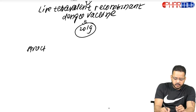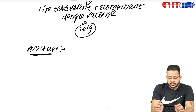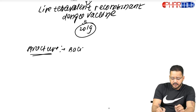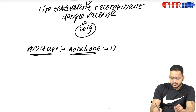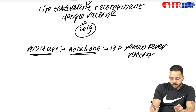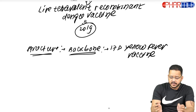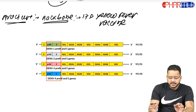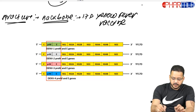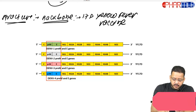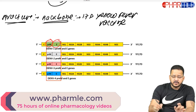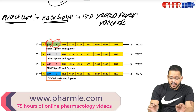I'll talk about the structure of this vaccine — how does it look like. The recombinant Dengvaxia is based on the 17D yellow fever vaccine. We have taken this vaccine as the backbone on which we have synthesized Dengvaxia. The structure of the 17D yellow fever vaccine shows that we have taken the pre-membrane (prM) gene and the envelope gene of the 17D yellow fever vaccine.